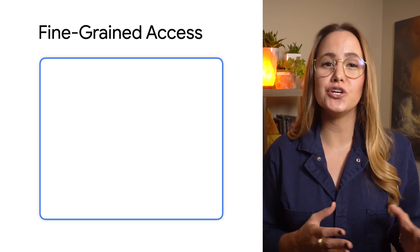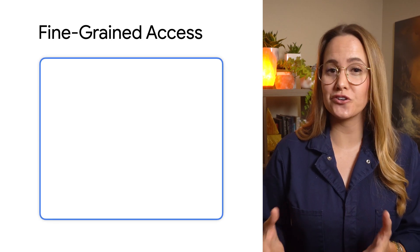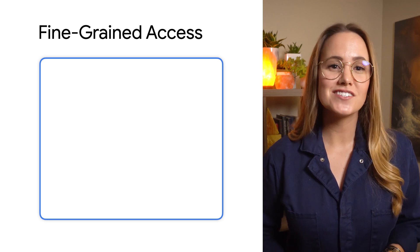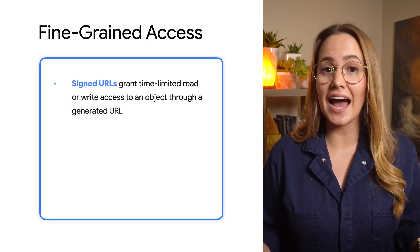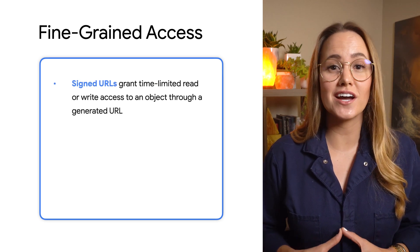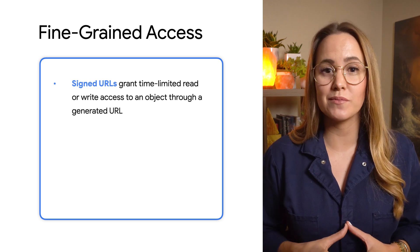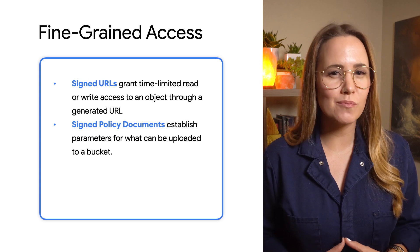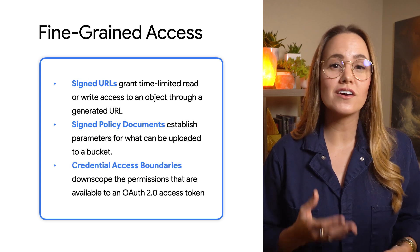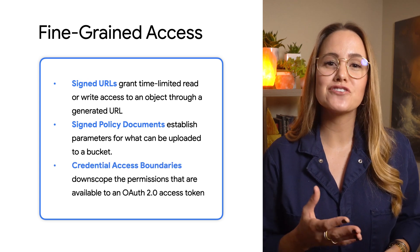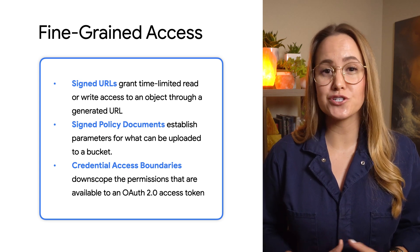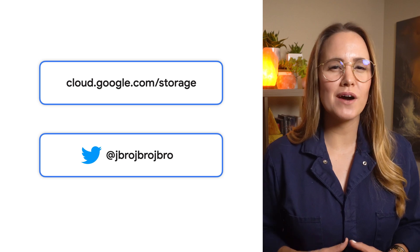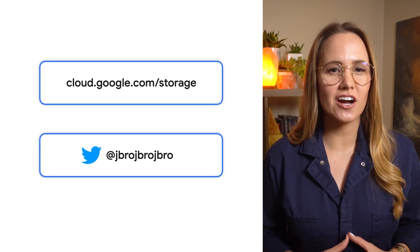In addition to choosing between uniform and fine-grained access when creating your bucket, you also have options for special controls, such as signed URLs for accessing an object through a link for a set amount of time, or signed policy documents to specify what can be uploaded to a bucket, or credential access boundaries to restrict the permissions that are available to an OAuth 2.0 access token. To learn more about these options, be sure to check out the documentation.